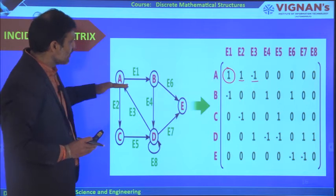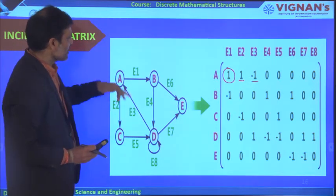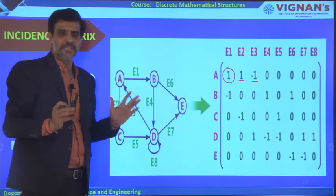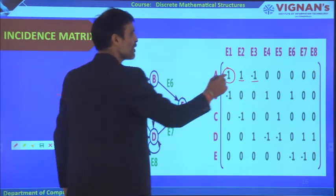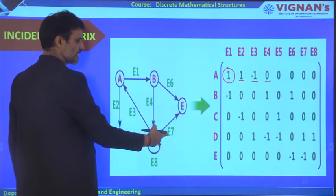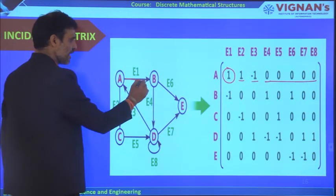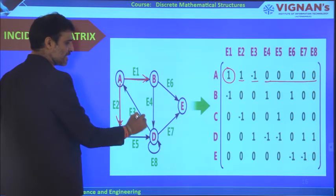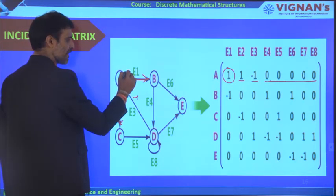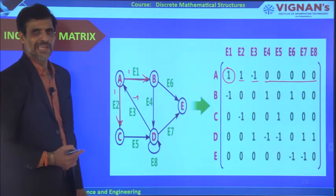When an edge is moving outward from a vertex, we represent that cell as 1. When an edge is coming into a vertex, we represent it as -1. When there is no connection between a vertex and an edge, we represent it as 0. For example, A to E4, E5, E6, E7, E8 — if there is no connection — they are all 0. This is how we construct the incidence matrix.